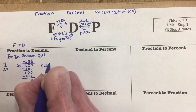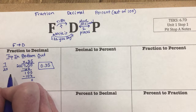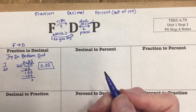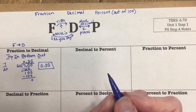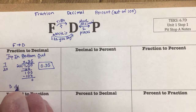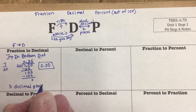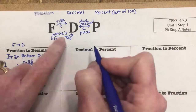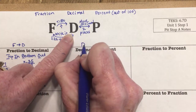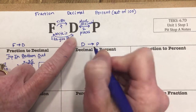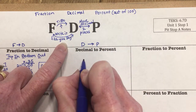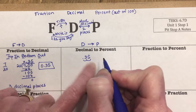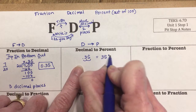When changing fractions to decimals, sometimes the decimal keeps going. You only need to go to three decimal places, so you can always stop after the third decimal place. Now for decimal to percent: starting with 0.35, I move the decimal two places to the right — one, two — and the decimal is now behind the 5, giving 35 percent.